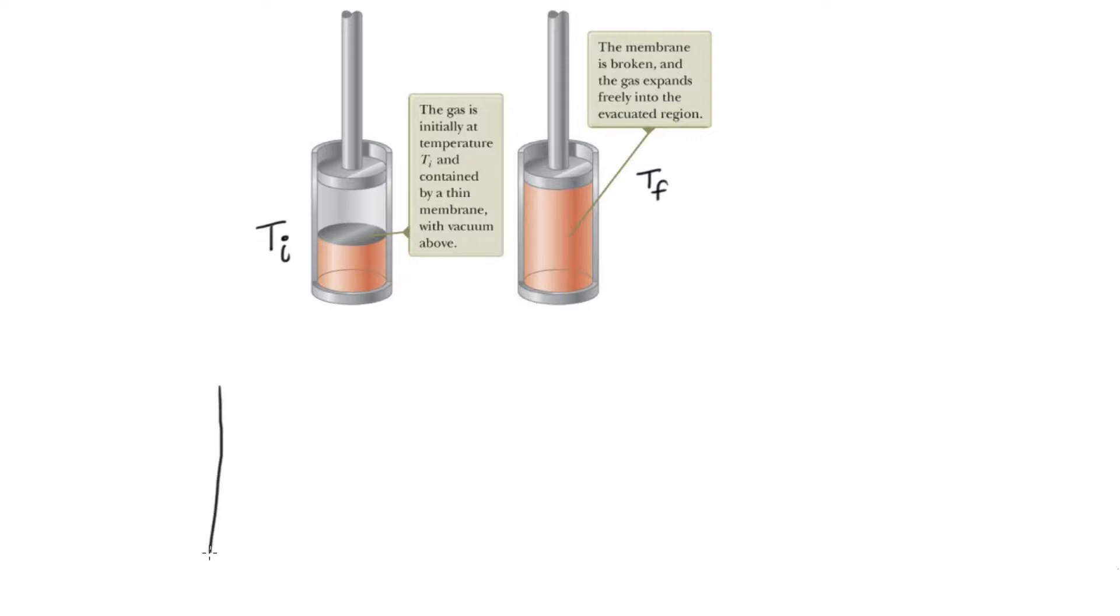And likewise, we can't actually plot this on a PV plot. So initially, we have a state with half the final volume and a certain pressure. And then at the end, we've got half the pressure and double the volume.